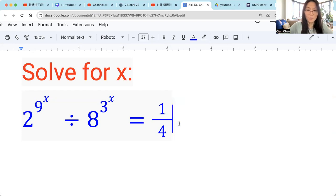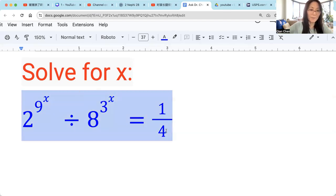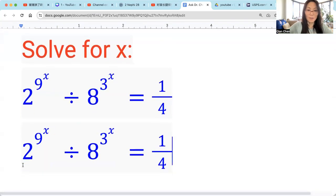So first, probably we want to change all the bases to be the same. So allow me to copy and paste. So we want to change the number 8 to be 2 raised by 3. And 1 over 4, let's change 1 over 4 first.